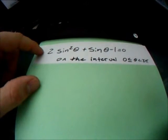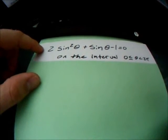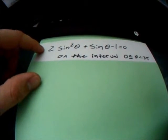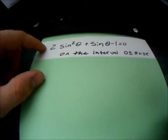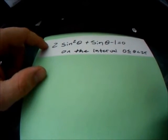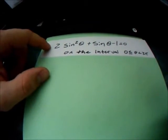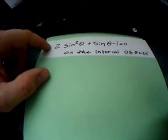Our problem today is 2 sine squared theta plus sine theta minus 1 equals 0, on the interval 0 is less than or equal to theta, which is less than 2 pi.